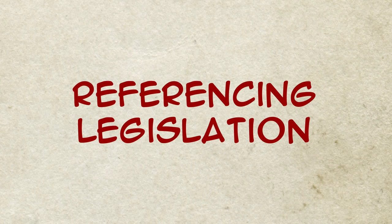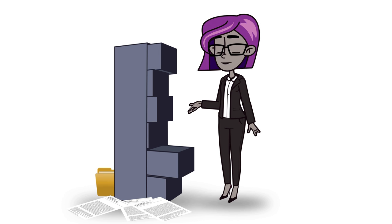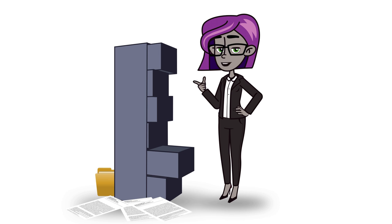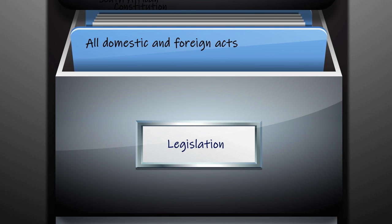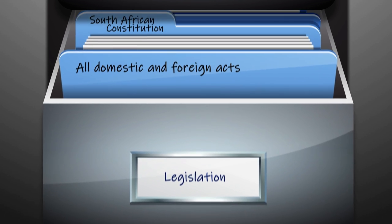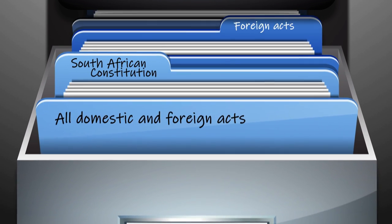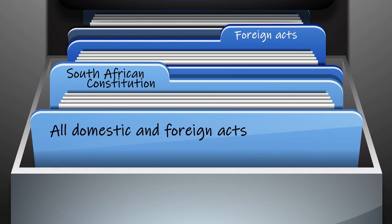In previous videos on the layout of a bibliography, I compared a bibliography with its separate headings to a filing cabinet with drawers. Today, we are opening drawer number three: legislation.